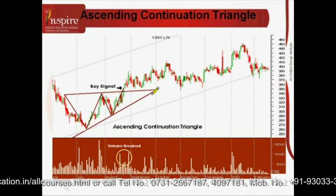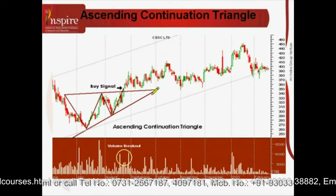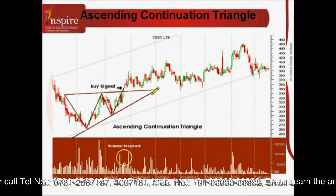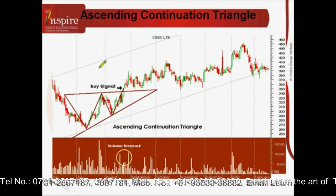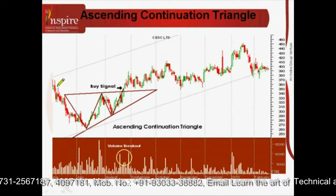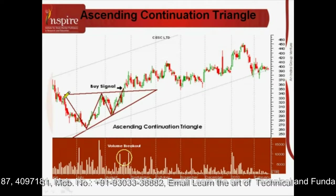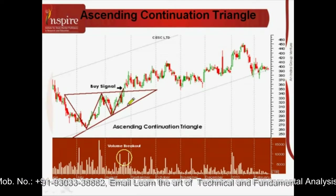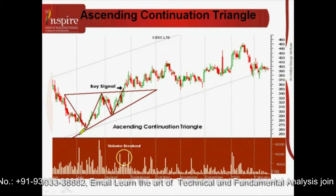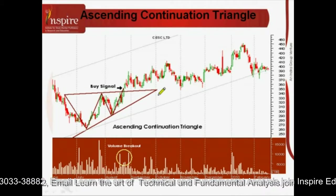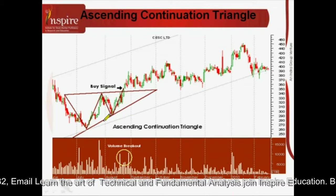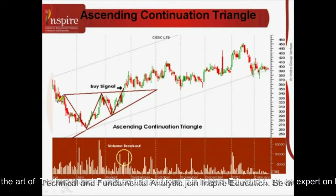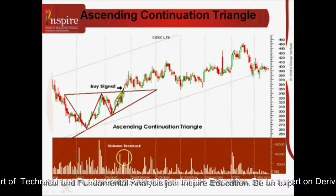Similarly, if there is a downtrend, then in the near future the downtrend is going to continue. As you can see in the chart, there are basically two coinciding trend lines. The lower trend line is rising and the upper trend line is horizontal.